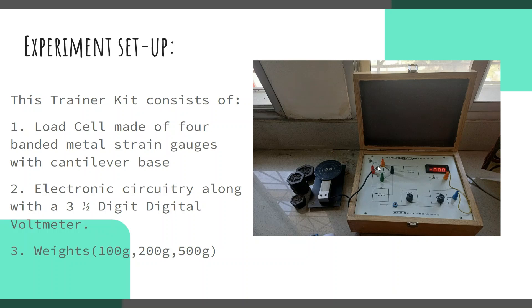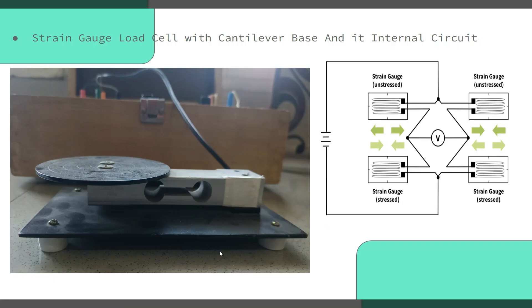This is how our load cell looks like. Here one end is fixed and the other end, the open end, we have a cantilever base where we apply force. This load cell has four strain gauges attached and these strain gauges are connected into the internal circuit inside this model through these connections. This is how it looks internally.